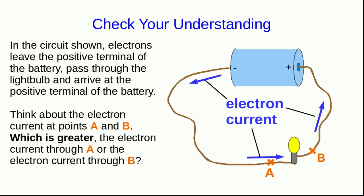Well, let's check your understanding. So here's the very simple circuit of a single battery and a light bulb and there are two points A and B so that as the electrons are going around this circuit they pass through A, then they pass through the light bulb, then they pass through B. Well, which is greater? The electron current through A or the electron current through B?